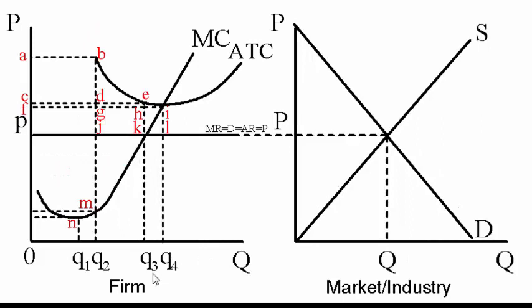Looking at an economic loss, the lowest point on ATC is at point I, where the firm is productively efficient. But the firm is going to produce Q3 units because that's where MR equals MC. It's allocatively efficient because price equals MC. However, the firm is not productively efficient when earning an economic loss, because it's operating at point E on the average total cost curve at the profit-maximizing quantity of Q3, not at the lowest point on its ATC curve.